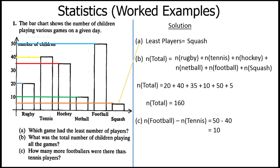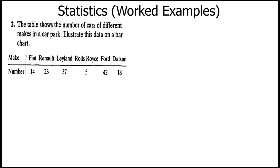Now let's go to the construction of a bar chart. We have been given a set of data. From our example two, the table shows the number of cars of different makes in a car park, and we need to illustrate this data on a bar chart. The makes we have are Fiat, Renault, Leyland, Rolls-Royce, Ford, and Datsun - this is the important data for us.